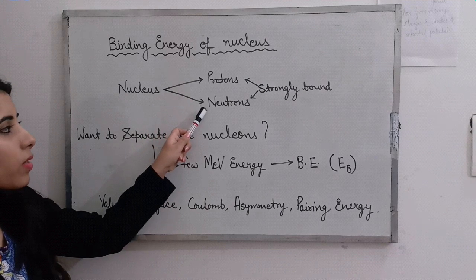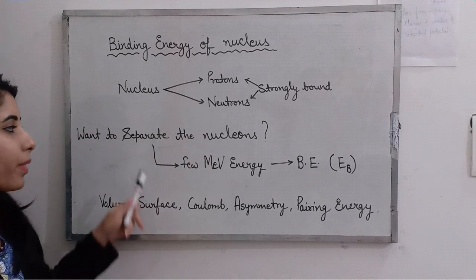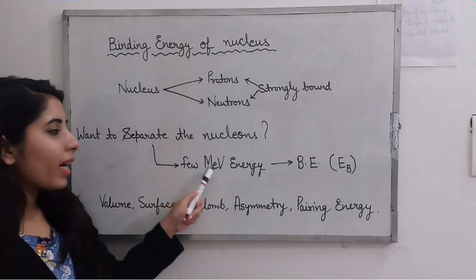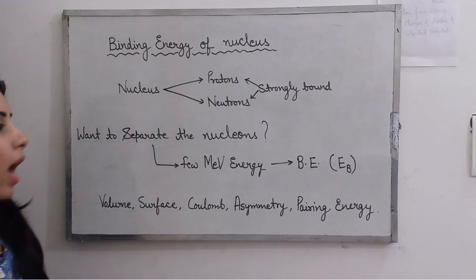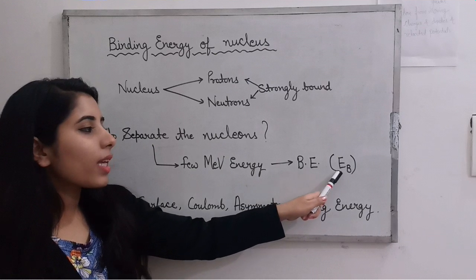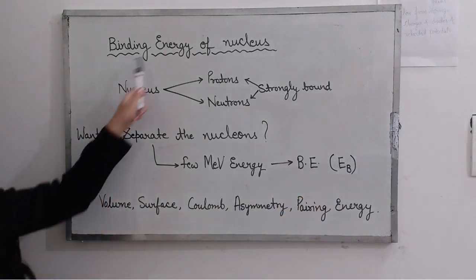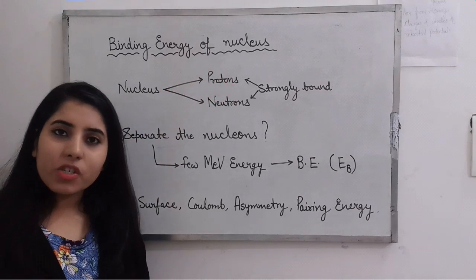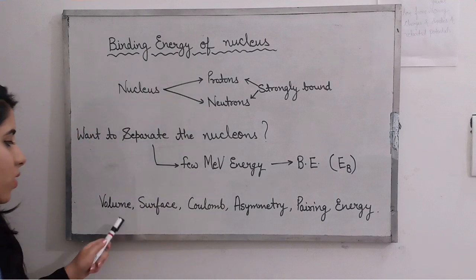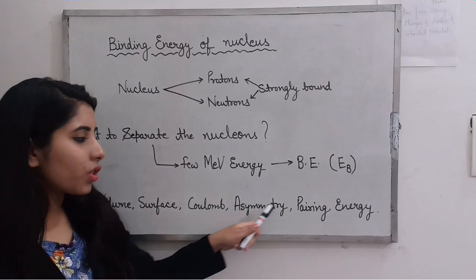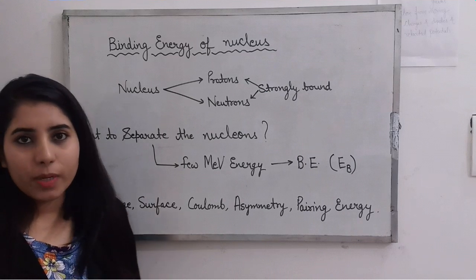The nucleus has protons and neutrons which are strongly bound. Now if we want to separate the nucleons, we will need a few mega electron volts of energy to separate the protons and neutrons from each other. This energy required to separate the nucleons is called binding energy, and it is represented as E with subscript B.